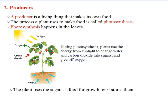Now let's start with the producers. A producer, by definition, is a living thing that makes its own food. The plant is a producer. The process a plant uses to make food is called photosynthesis.